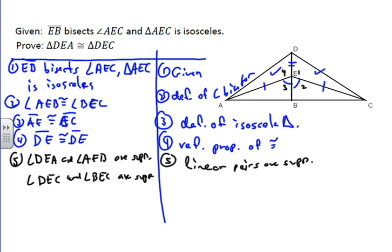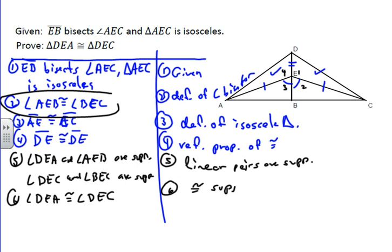But now that we have those two supplementary statements combined with this congruent statement, we can claim that angle DEA is congruent to angle DEC, and that's by congruent supplements theorem. And then once we have that, that actually is enough. That gives us our side-angle-side to prove what it is we set out to prove at the beginning, which is triangle DEA is congruent to triangle DEC, and that is just by side-angle-side. And that's by far the best way to do it.